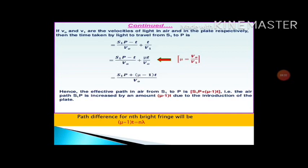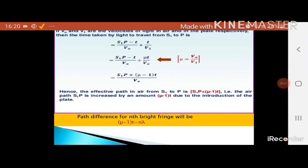For a bright fringe, the path difference should equal N lambda, where N is the number of fringes in the distance X. To find the number of fringes in distance X, we use white light. The fringes are colored with the central fringe appearing white. We set the cross wire on the central white fringe and note the micrometer reading. Then we introduce the plate from one side, observe the shift in the central fringe, set the cross wire on the new white fringe, and note the second reading. Subtracting the two readings gives the shift X.